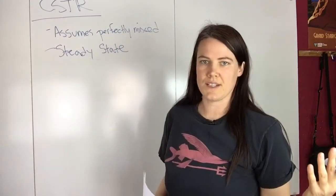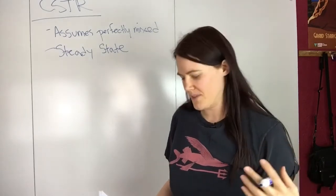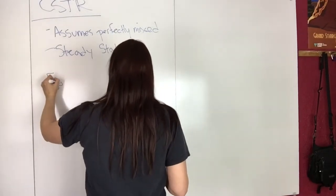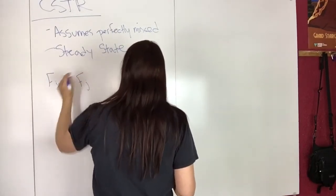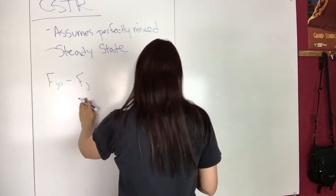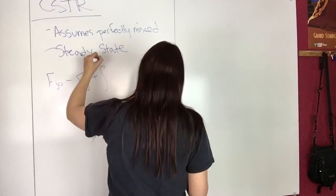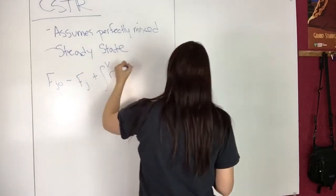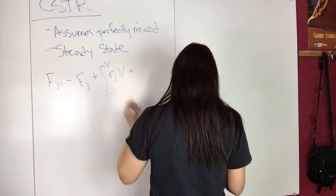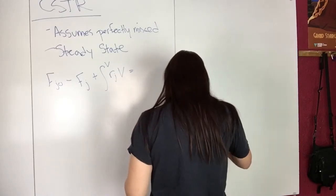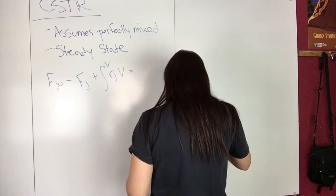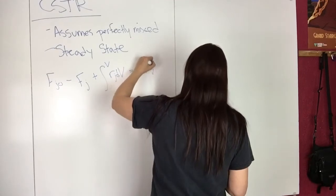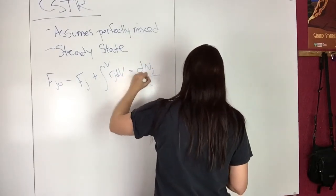If I write down the general mole balance equation from a previous video, this is the general mole balance: FJ0 minus FJ - whatever's flowing in minus whatever's flowing out - plus what you're generating inside the reactor, and then this is what is accumulating inside with time.